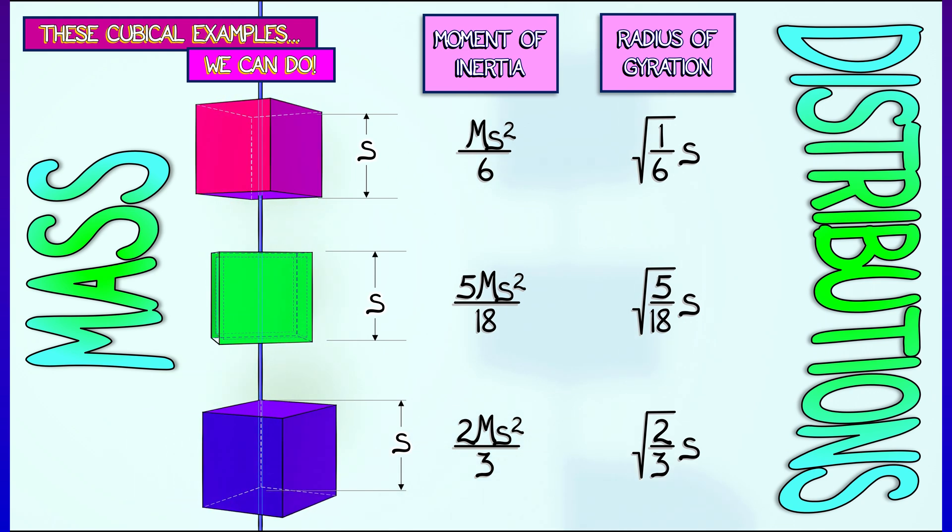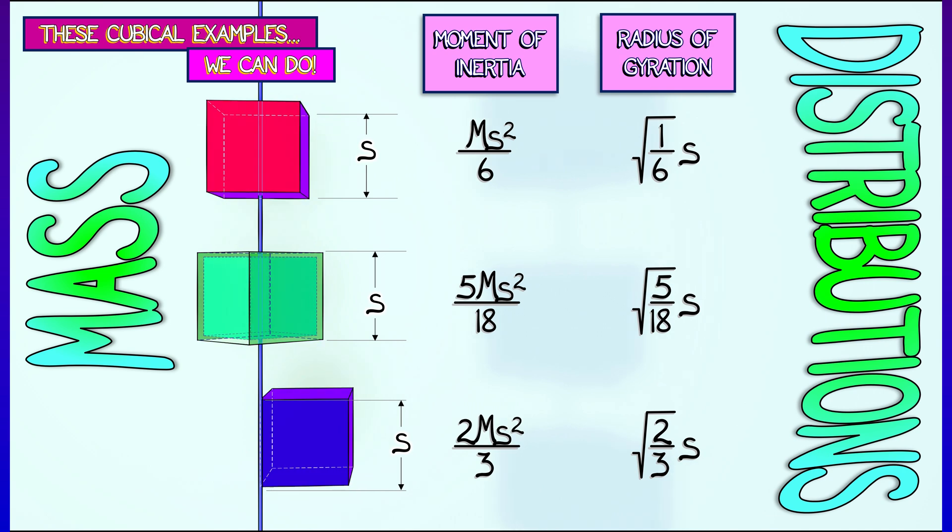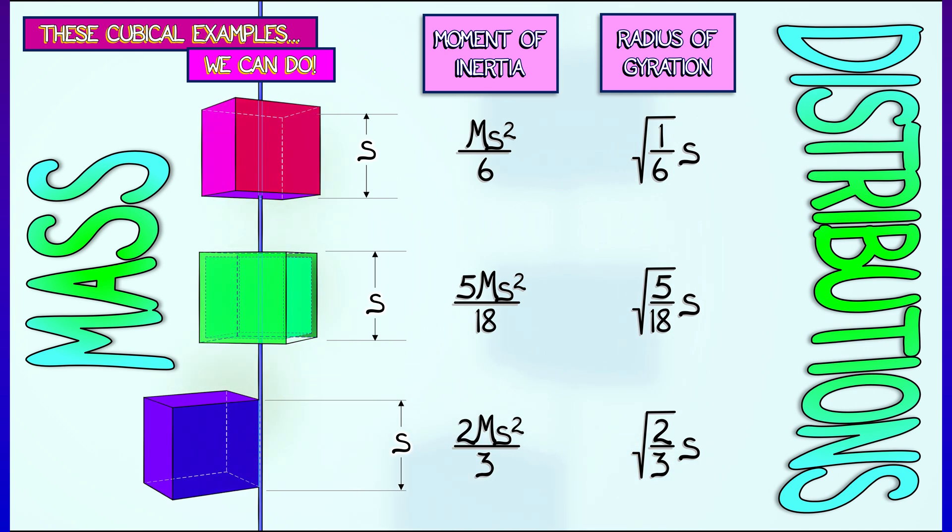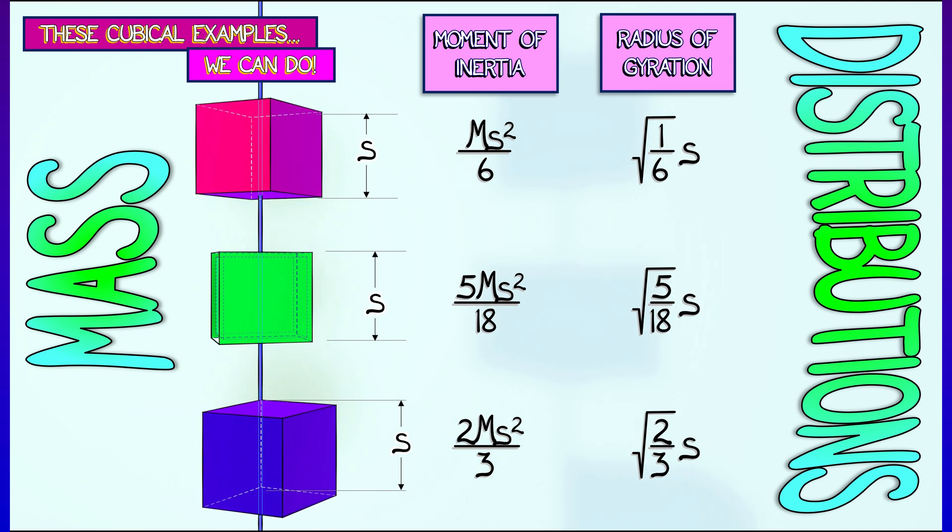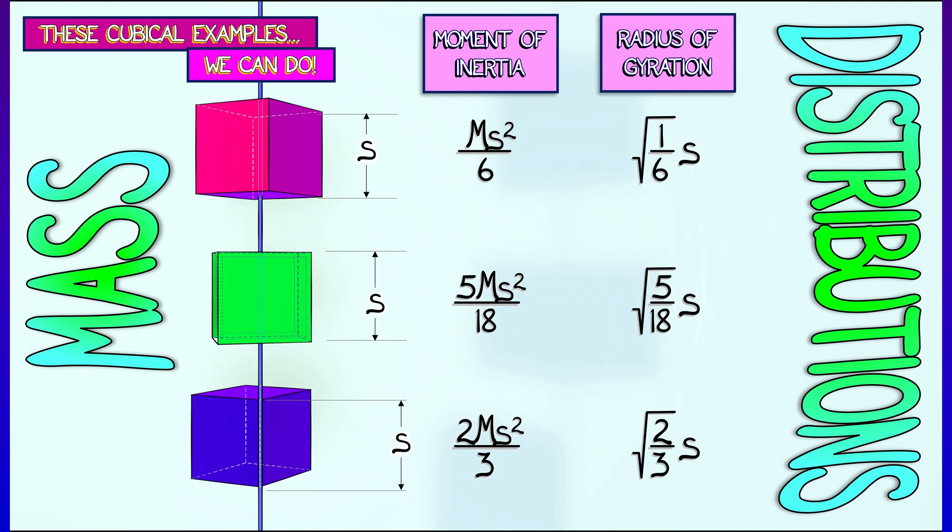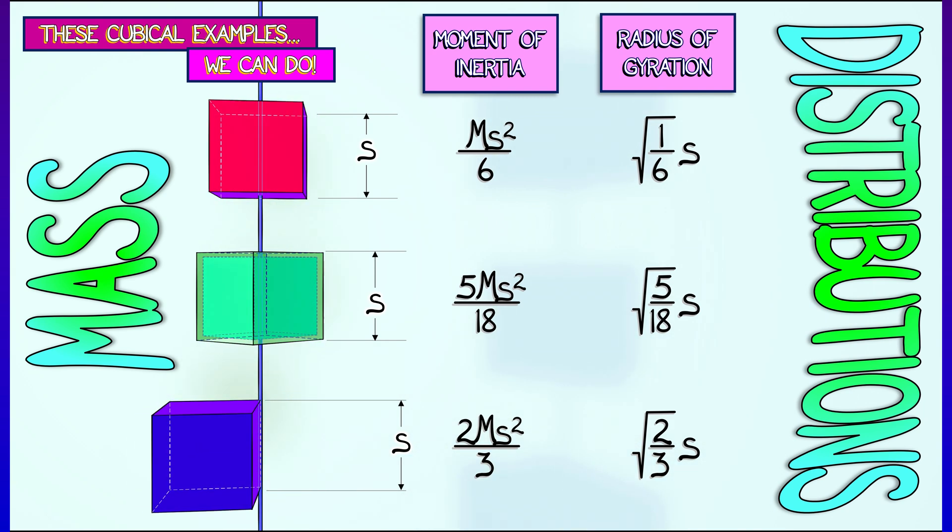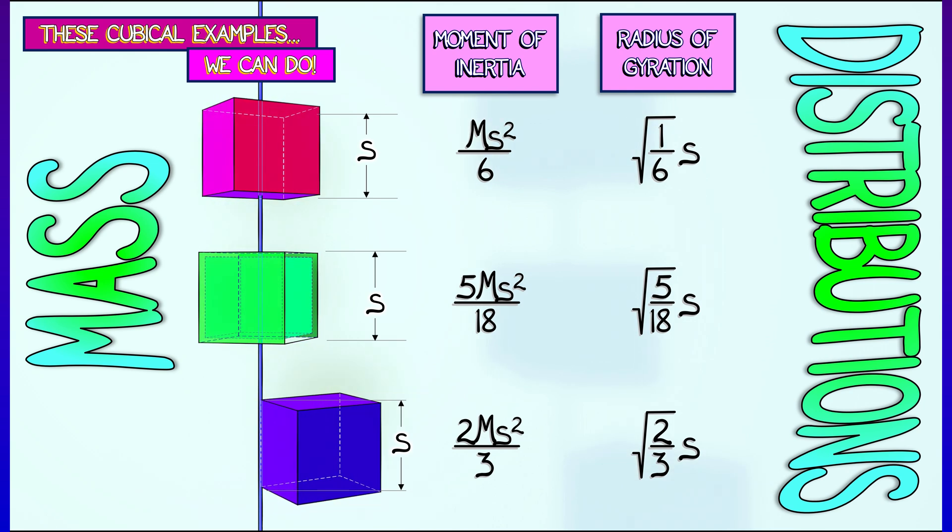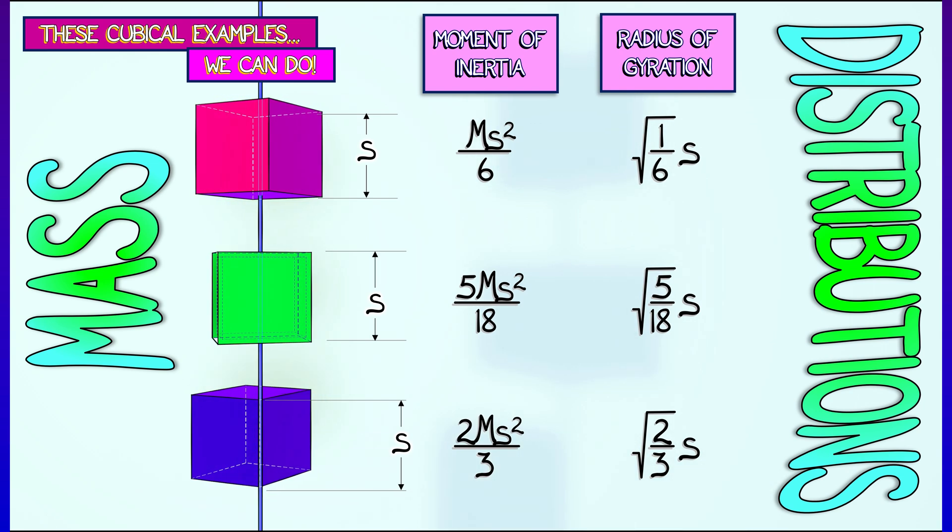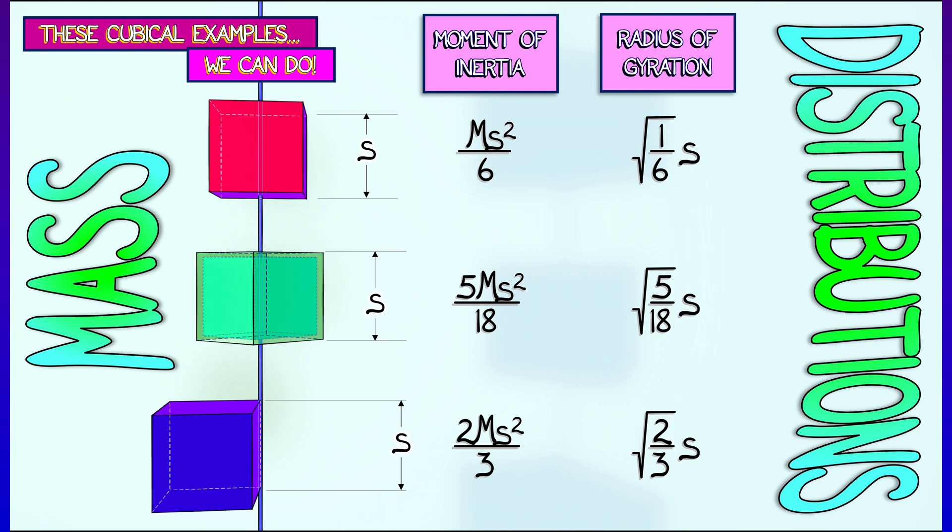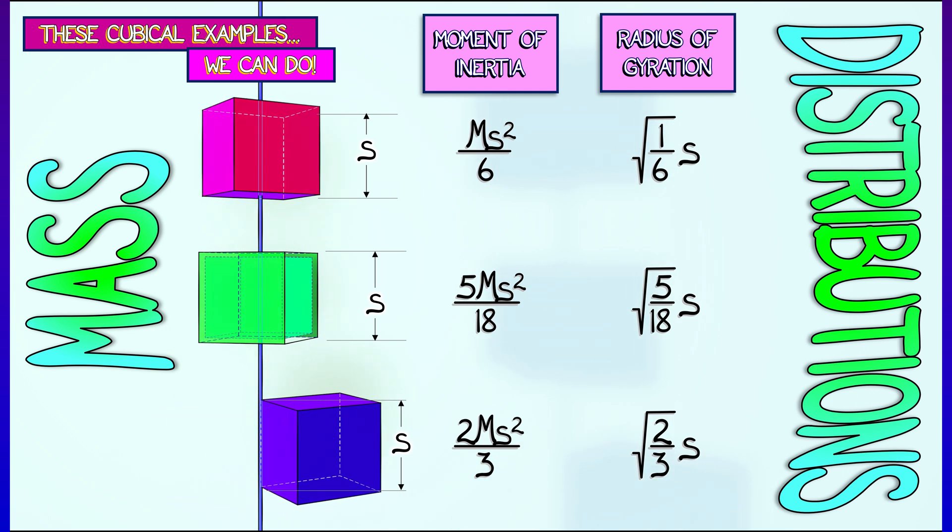So for a solid cube, axis through the center, the radius of gyration is s divided by square root of 6. For a cubical shell, it's square root of 5/18 times s. And for a solid cube rotated about one of the side edges, this is going to be square root of 2/3 times s.